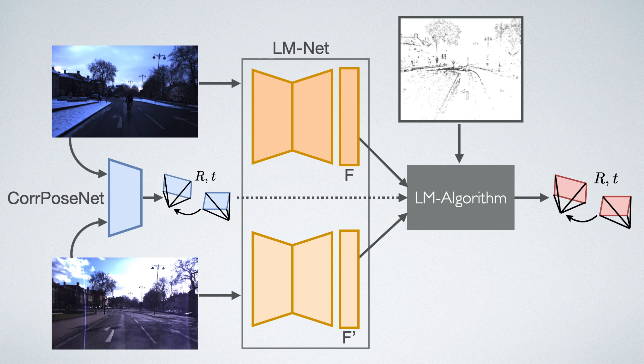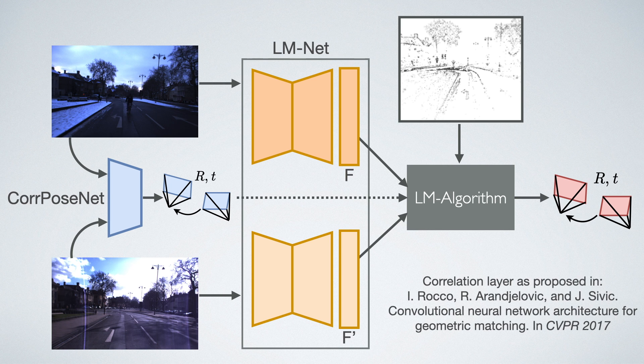We found that simply concatenating the images and feeding them into a standard network doesn't work well in our case because of the large baselines. Therefore we utilize the correlation layer proposed by Rocco et al.